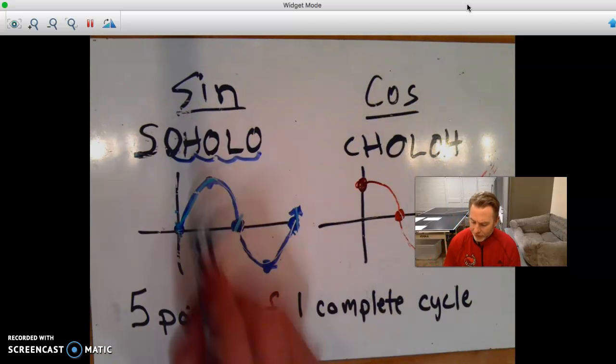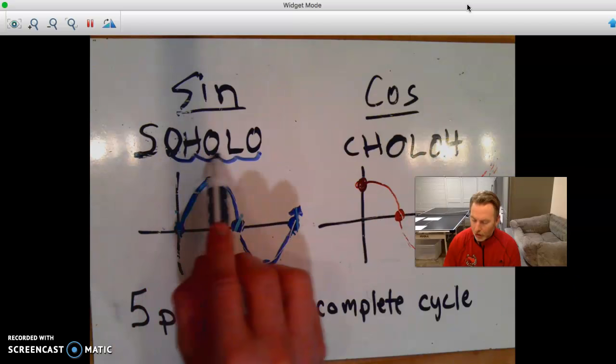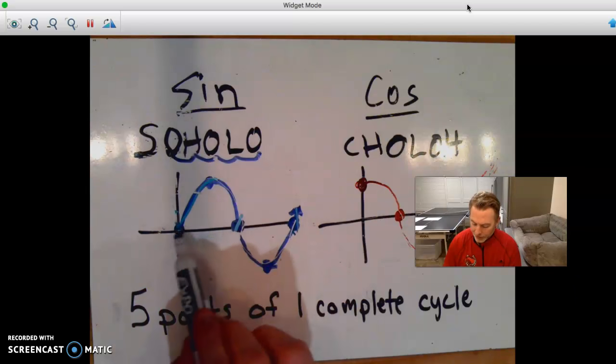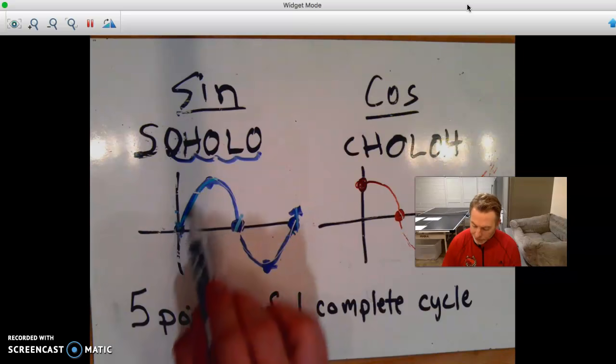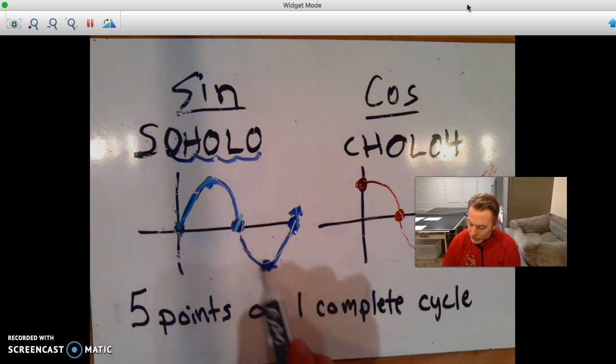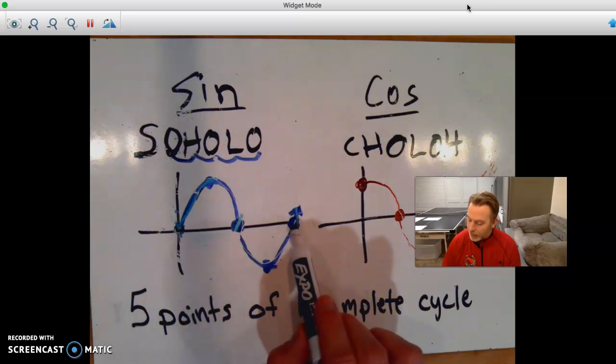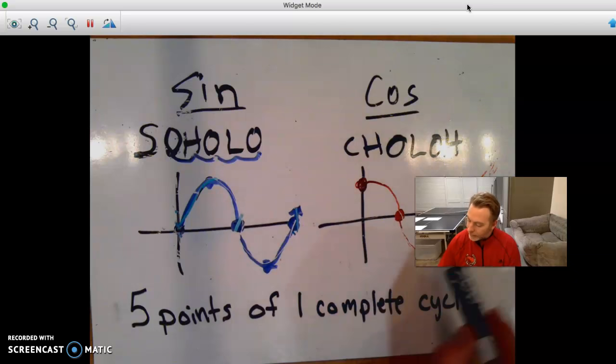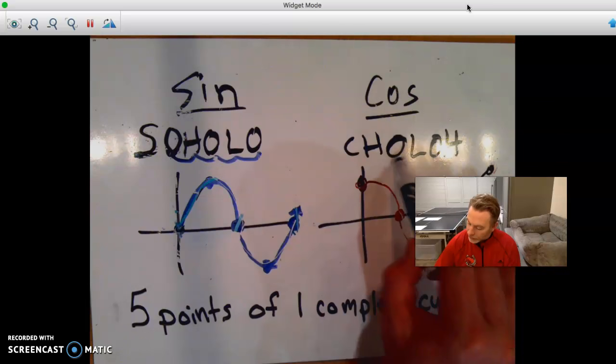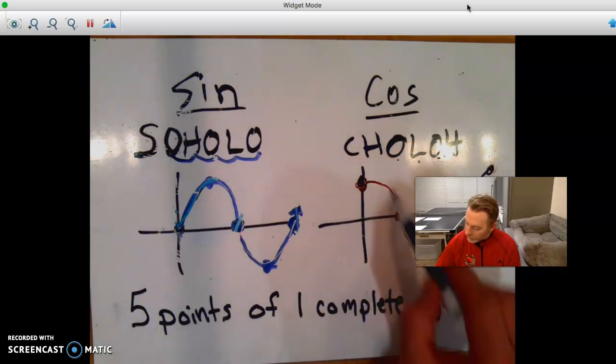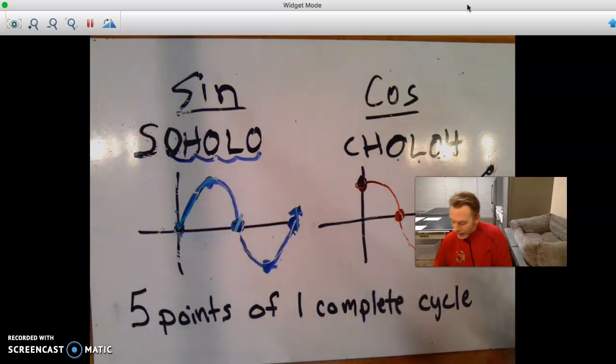So for the sine graph, we use so, ho, lo. Basically, the graph starts at the origin or the midline, goes to a high, through the midline, to a low, back to the origin. And so, ho, lo has a similar pattern, except it starts high, origin, low, origin, high. So the origins are your midlines. Okay, and then that's one complete cycle. So a little review there.